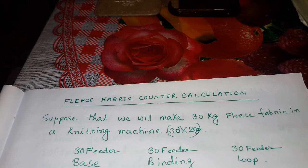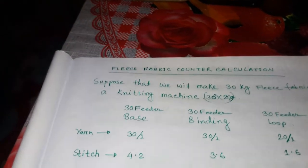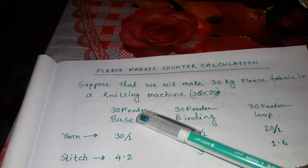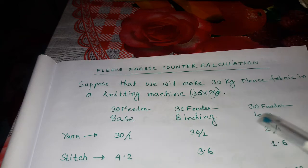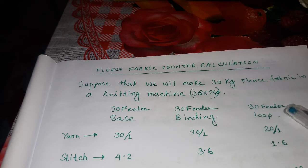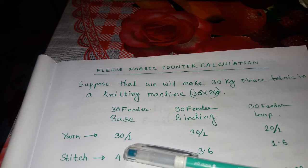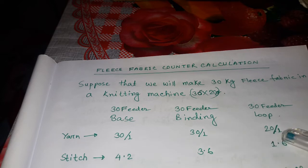The machine has a 30 gauge and 20 gauge setup. We know that this machine has a base winding and loop yarn — the base is a knit binding, a small knit, and the loop is a tuck loop. For this fabric, suppose that we need 30 single base yarn, 30 single binding yarn, and 20 single loop yarn.